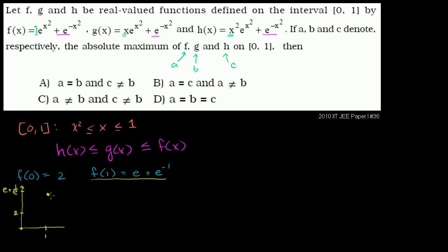Let me draw axes. We know at 0 the function takes the value 2, and at 1 it takes e + 1/e. But we don't know what the function did in between. The right endpoint is the maximum if the function is constantly increasing. It would not be the maximum if the function looks like it dips and peaks somewhere inside. The way to tell is to take the derivative of f, which gives us the slope at any point.